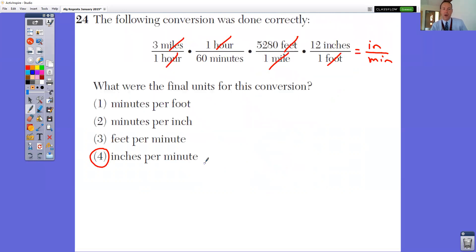And in number 24, what were the final units for the conversion? Miles and miles would cancel out. Hours and hours would cancel out. Feet and foot would cancel out. What are we left with? We're left with inches over minutes. So inches per minute, top divided by bottom, inches per minute.